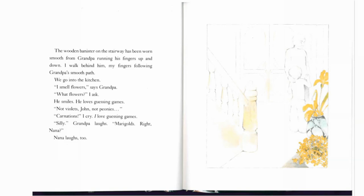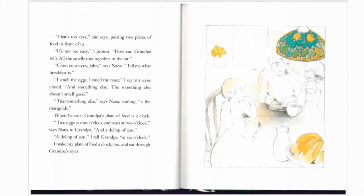I smell flowers, says grandpa. What flowers, I ask. He smiles. He loves guessing games. Not violets, John. Not peonies. Carnations, I cry. I love guessing games. Silly, grandpa laughs. Marigolds, right Nana? Nana laughs too. That's too easy, she says, putting two plates of food in front of us.